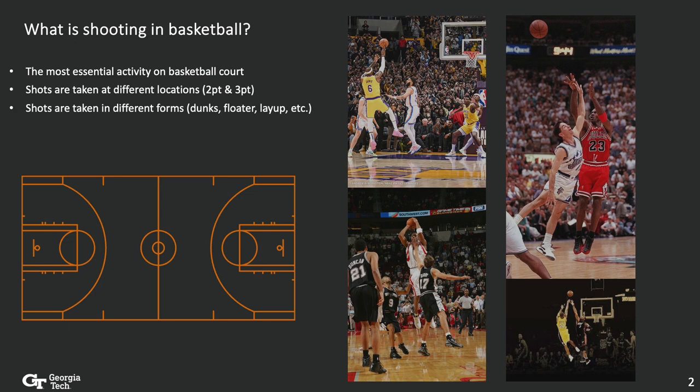Shooting is the most important activity in a basketball game. All the dribble, passing, screening, and tactics — they all have one purpose: to create an easier shot, or to prevent one. Shots can be taken at different locations — 3-pointers, mid-range, or right under the basket — and in different forms: you can shoot the ball, dunk it, or make a layup.